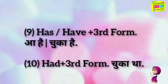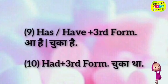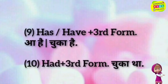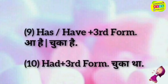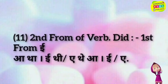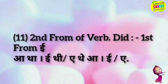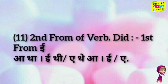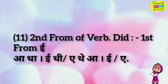Has / have plus third form — aa hai hai, chuka hai. Had plus third form — chuka tha. Second form of verb / did plus first form — ia tha, e thi, eth hai hai.